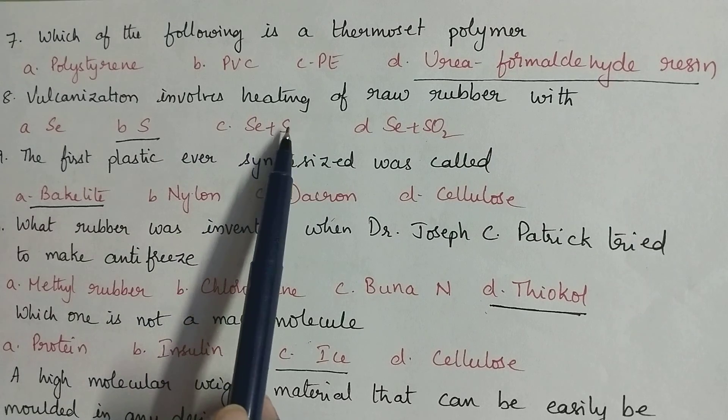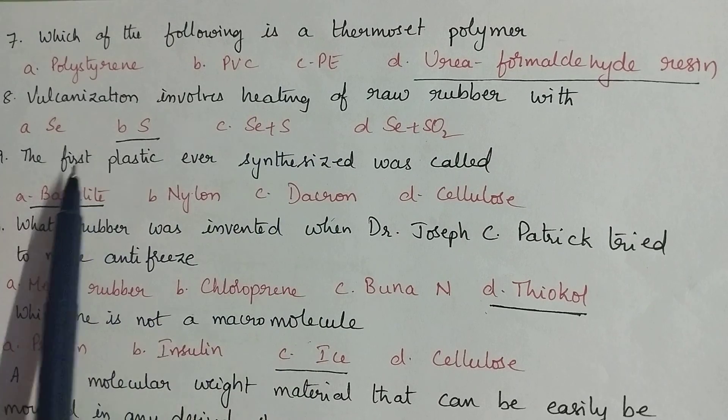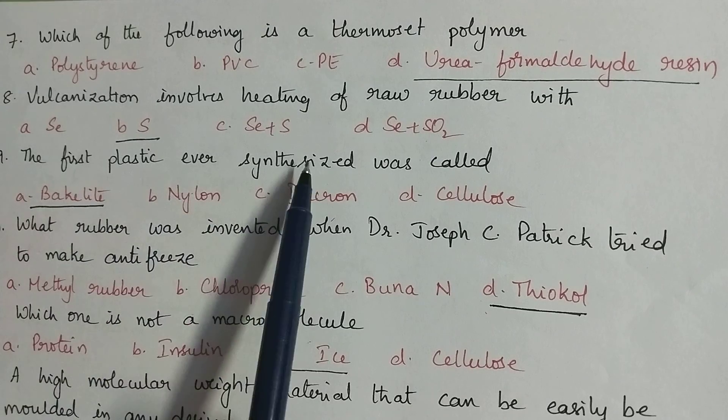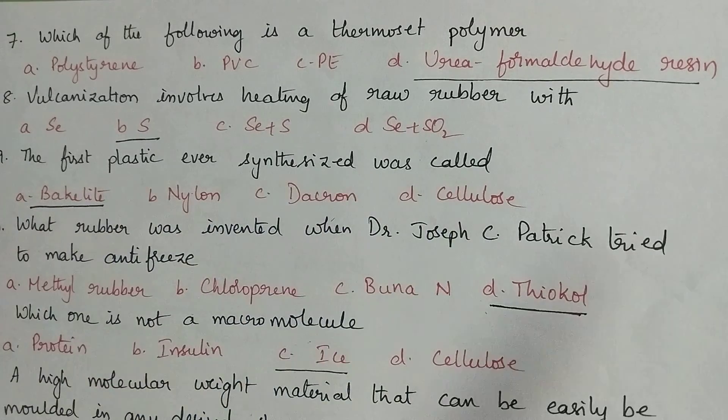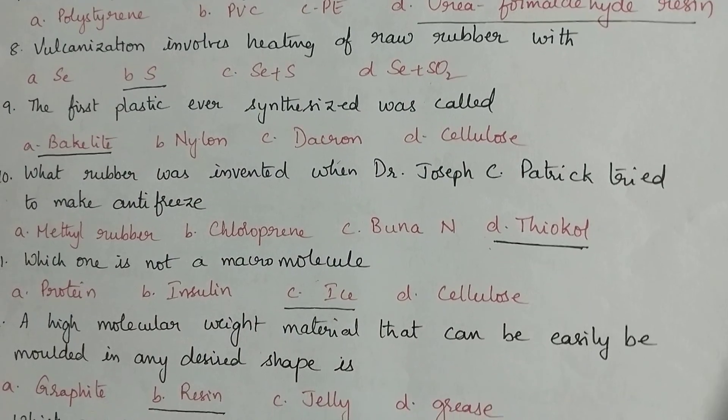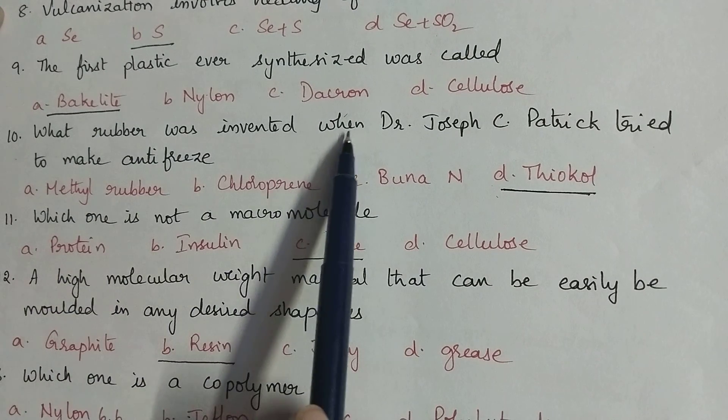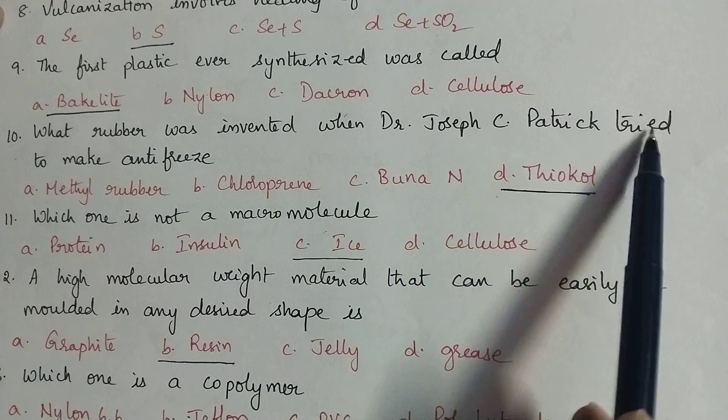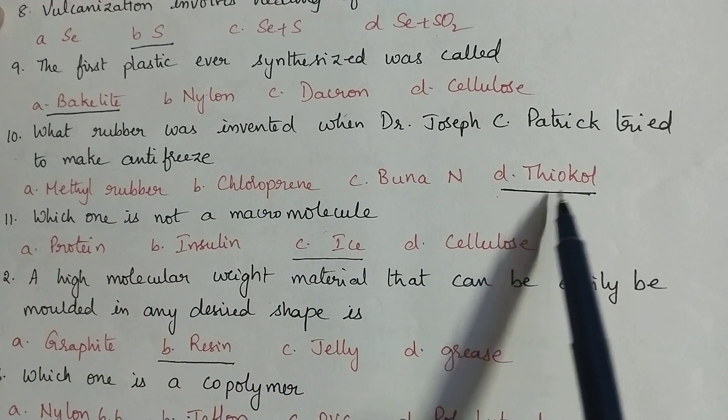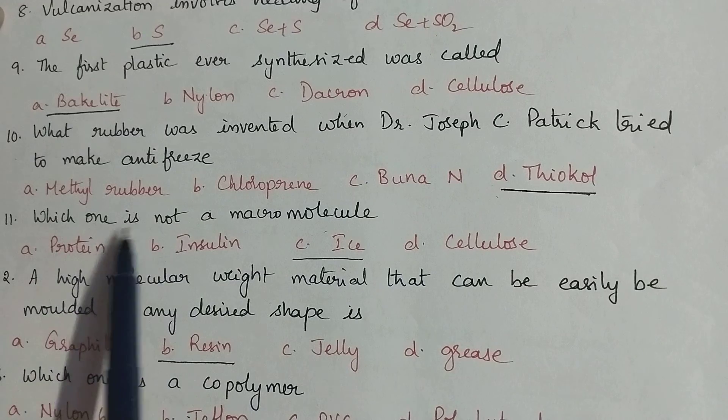The first plastic ever synthesized was called bakelite. When what rubber was invented? When Dr. Joseph C. Patrick tried to make antifreeze, it is thiokol.